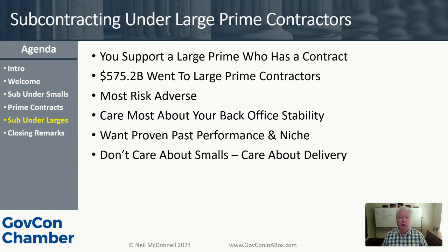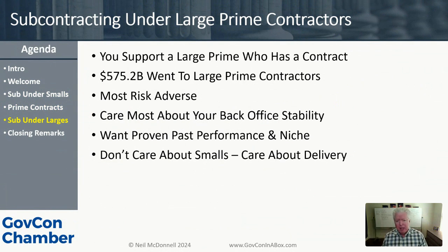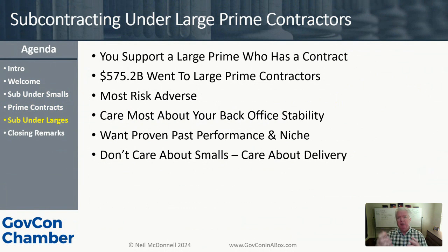The third revenue stream is subcontracting under large prime contractors. A large prime contractor won the contract with the federal government, and you support them. The difference from smalls is that a large business might have a billion dollars or tens of billions in contracts — a much bigger piece of the pie. In FY 2023, $575 billion went to large prime contractors — what we call 'other than small.' Compare that to roughly $175 billion to smalls — this is a huge chunk of money.